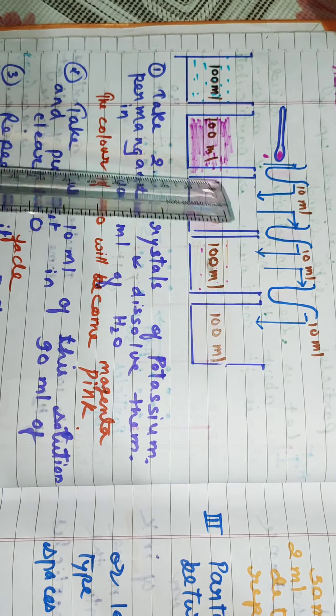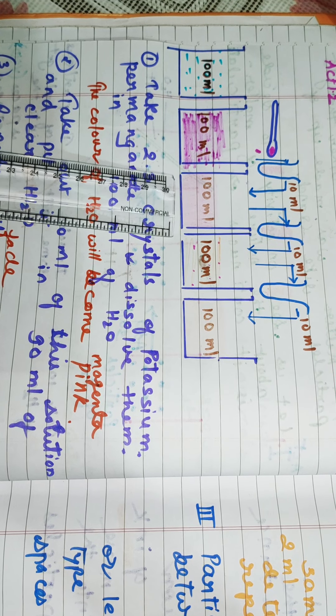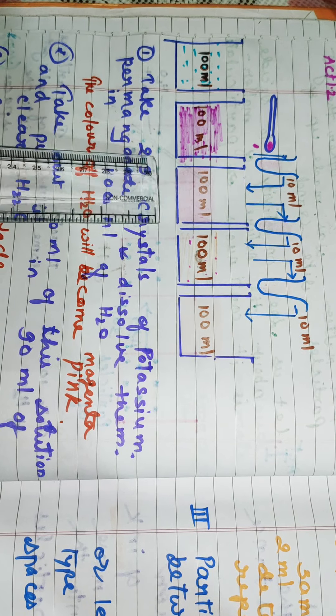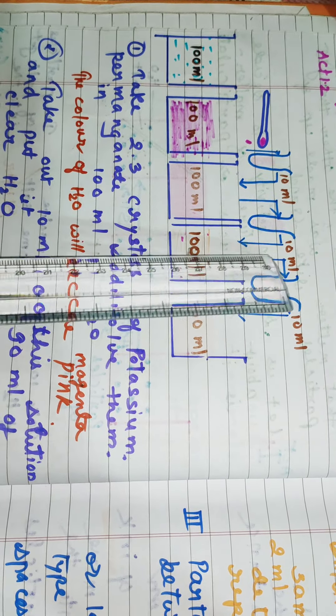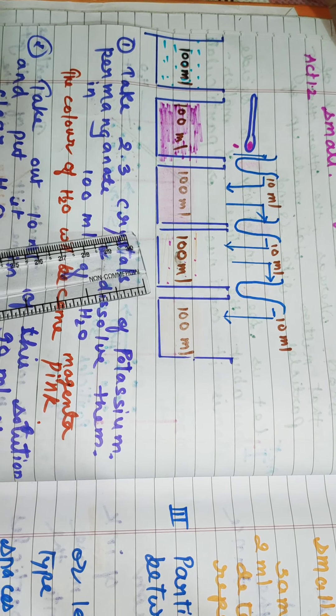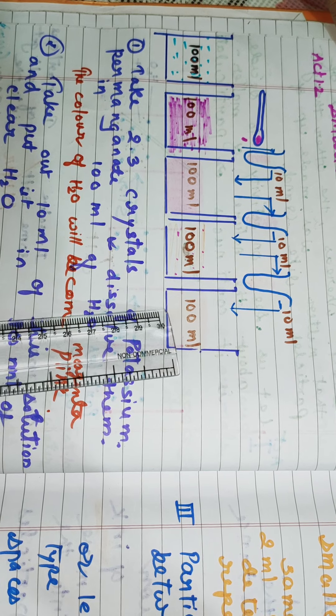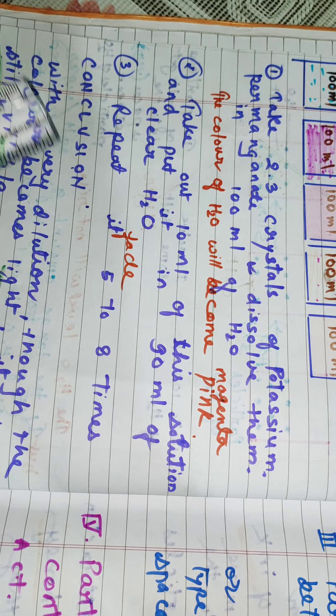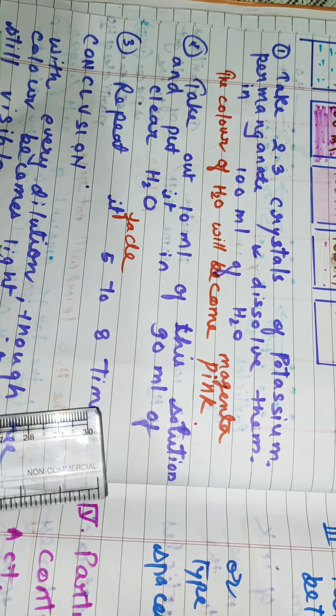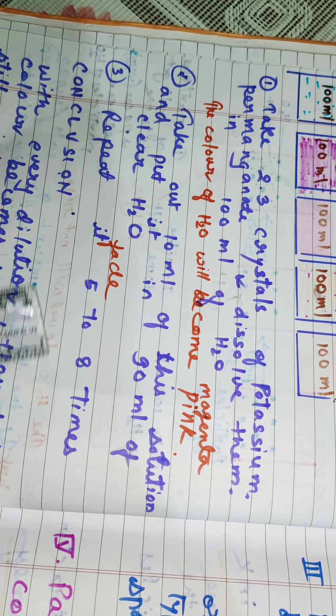From here, you have to take 10 ml of this magenta pink color in a test tube and add it in 90 ml of clear water. The magenta pink will fade in color. Then again take 10 ml of this colored water and transfer it to 90 ml of clear water. And again take 10 ml of this very light pink color water and add it in 90 ml of clear water. The color will continuously fade, becoming lighter. Repeat it 5 to 8 times.